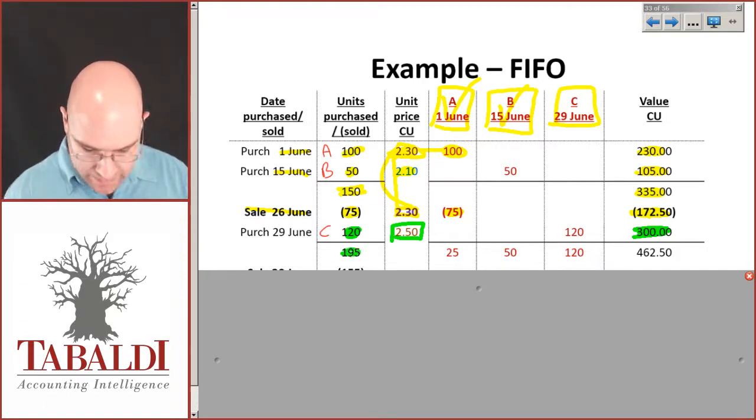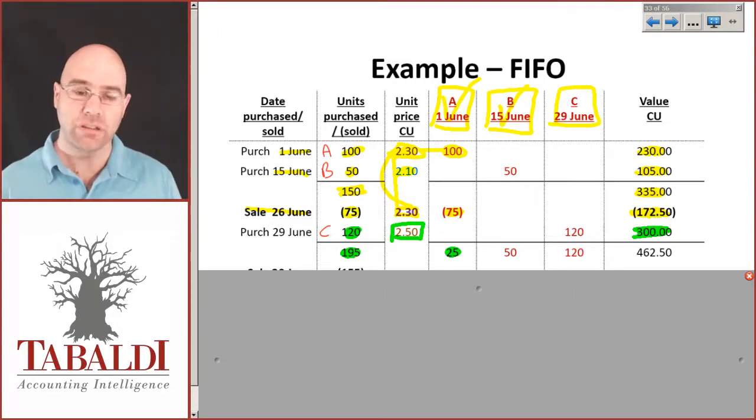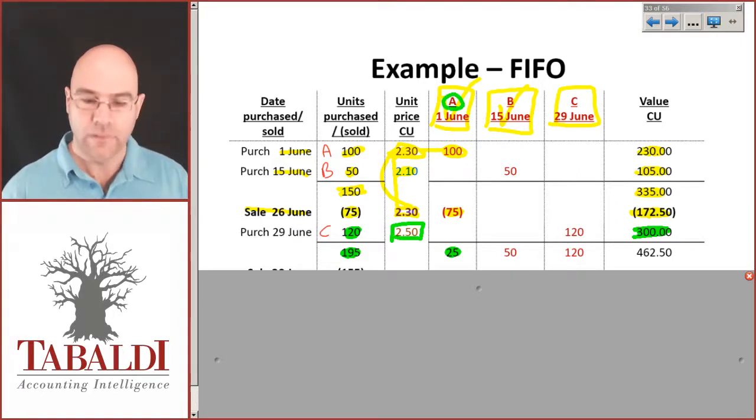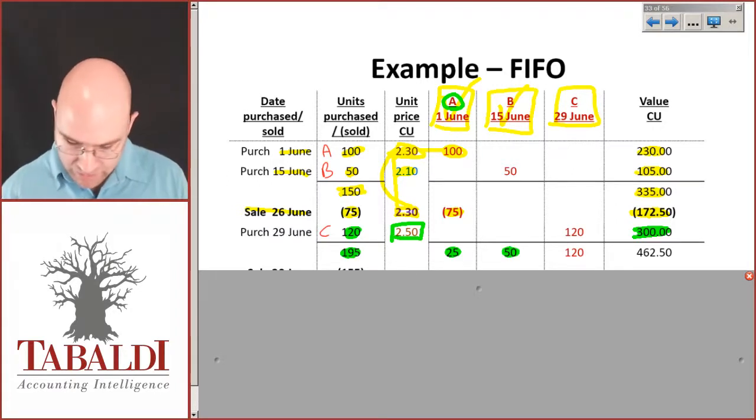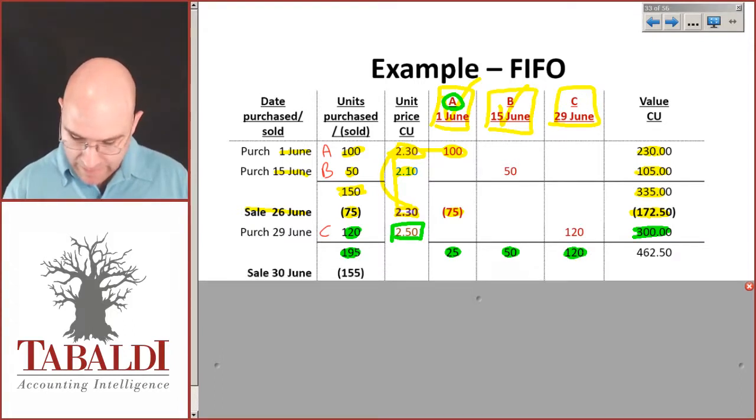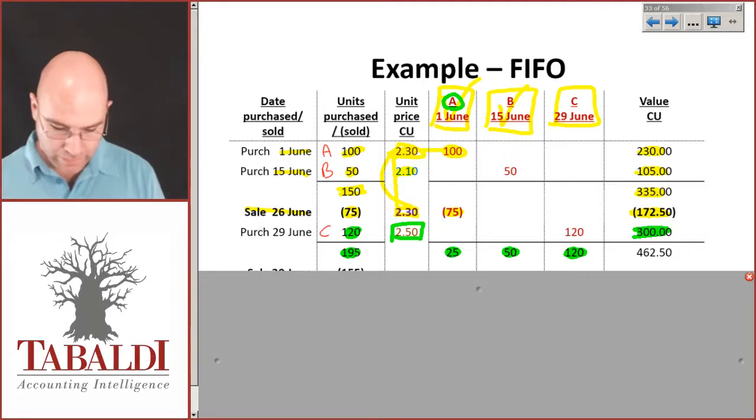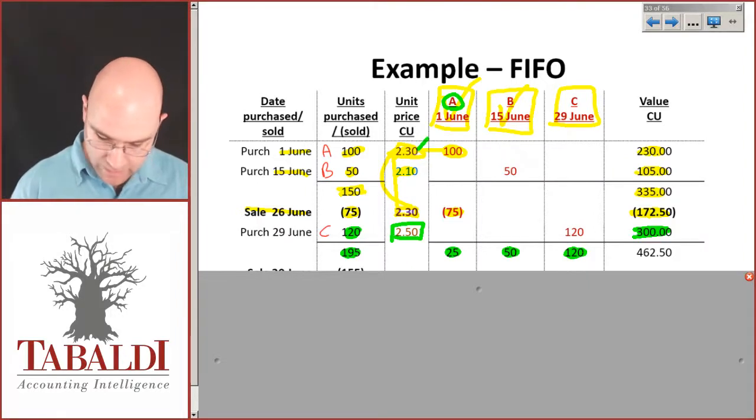Let's now stop and we add that up, and we've got 195 units on hand. 25 of those came from our first purchase on the 1st of June in category A. We had 100 purchased items, we sold 75. The purchase on the 15th of June, we still got all 50 items, and the purchase on the 29th of June, we still got all 120 items. And they are valued, 25 times 2.3 plus 50 times 2.10 plus 120 times 2.5 would give me 462.50.